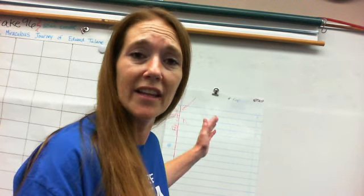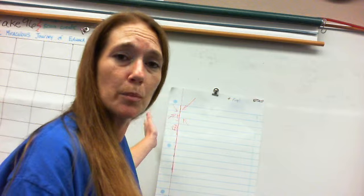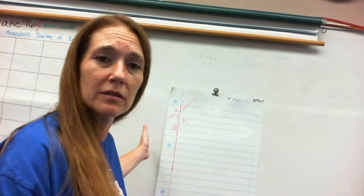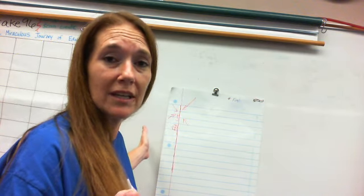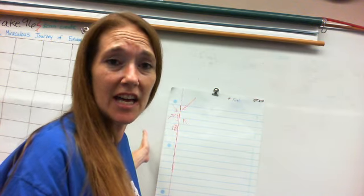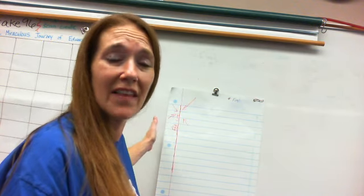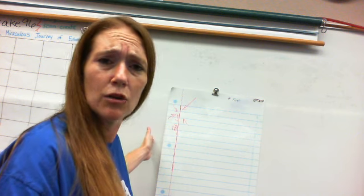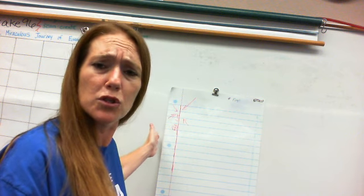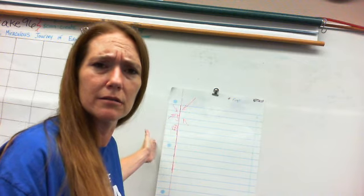Have you ever wondered what that red line is on your binder paper? Well, I'm here to tell you. It's a guideline, and the guideline's there to show those words the way — show them where they're supposed to go. Keep those words by the guideline.